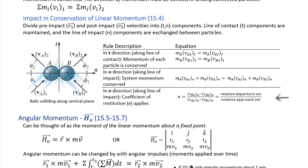If you have a second ball, even in one-dimensional motion, you need an additional equation: conservation of system momentum. If we bounce a ball with no T components and everything is in the N direction, we need both equations — conserving momentum between the balls in the system and also applying the coefficient of restitution.